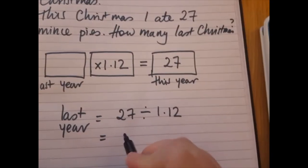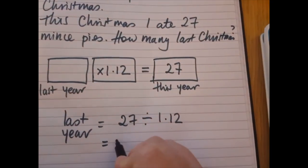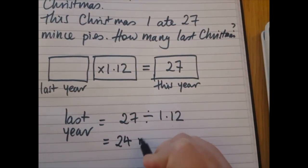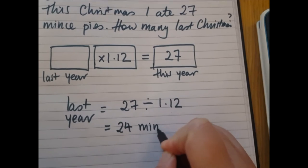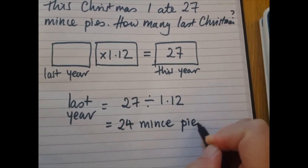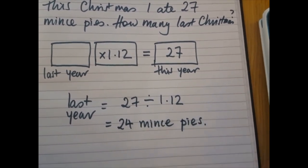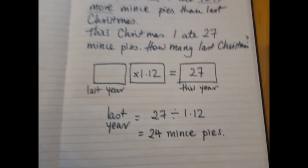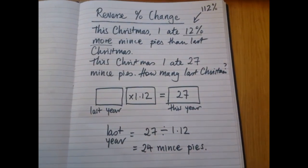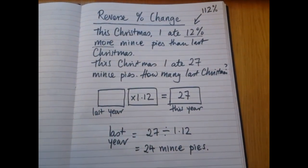Nearest whole number of pies: 24 mince pies. There we go. 25 mince pies — haha, thank you.